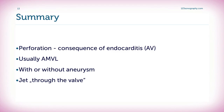In summary, perforation is usually a consequence of aortic valve endocarditis. It involves the anterior mitral valve leaflet. It can occur with or without an aneurysm, and the echo feature that is most prominent is that of a jet which is directed through the valve.